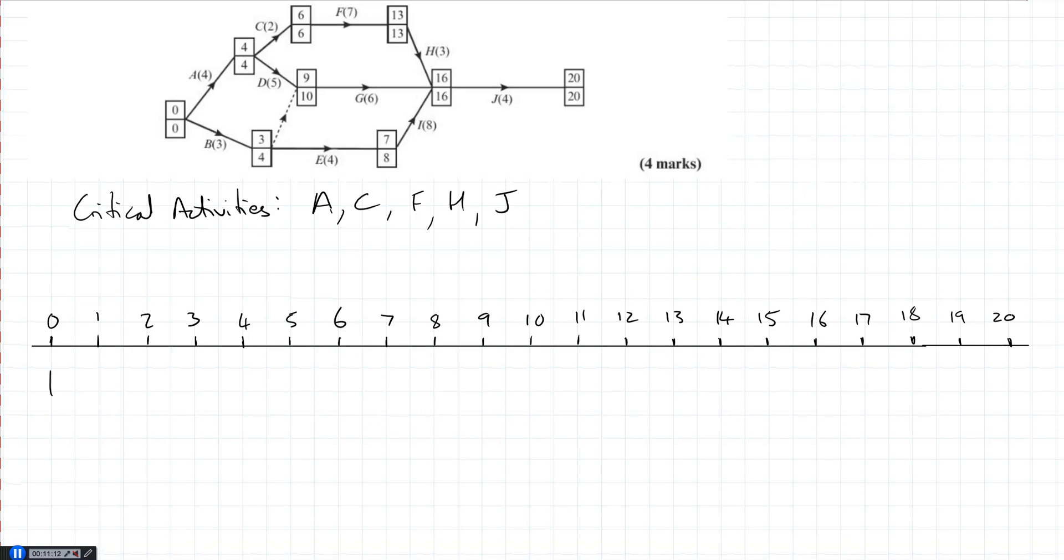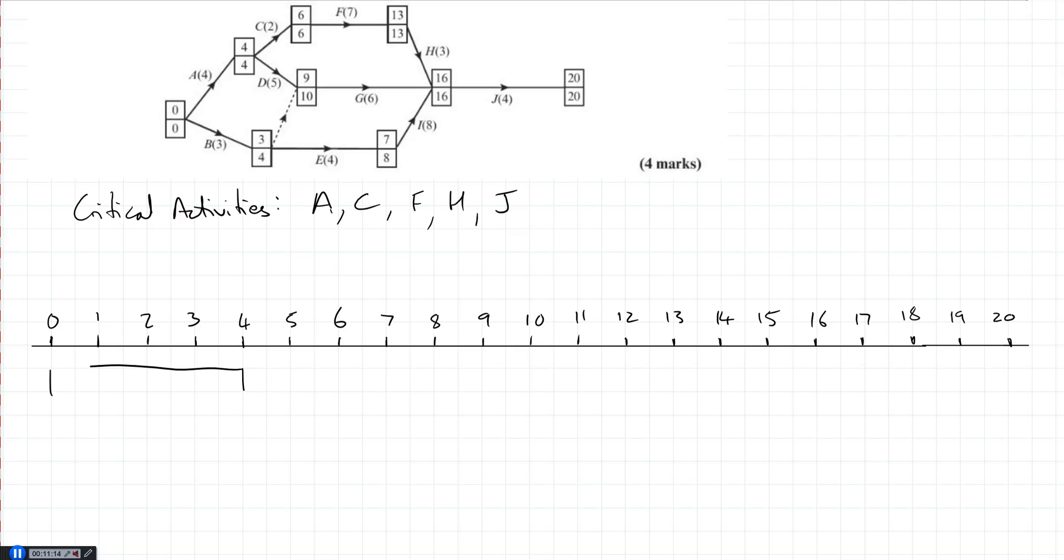So we're going to start at 0. A is 4. So we go up to 4. You know it should be nice and neat. C can start at 4. Goes up to 6. And last 2. F starts at 6. Goes up to 13. So it's all checking out so far. H starts at 13. It's 3. And J is 4. No gaps. It's a critical path. There should be no gaps whatsoever. It gets its own line. No other critical paths.